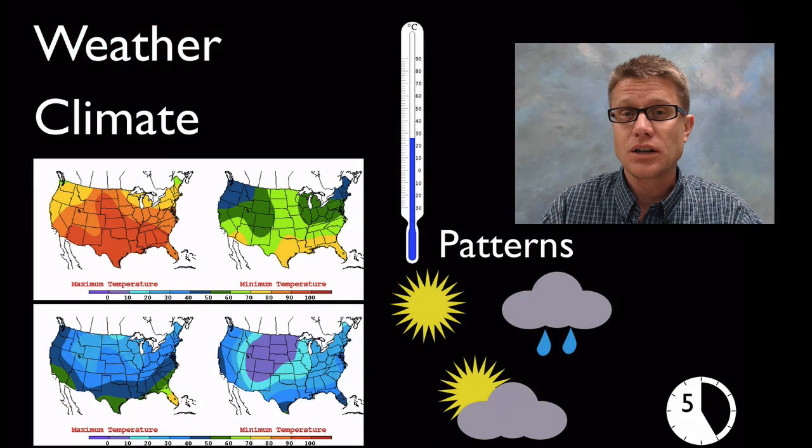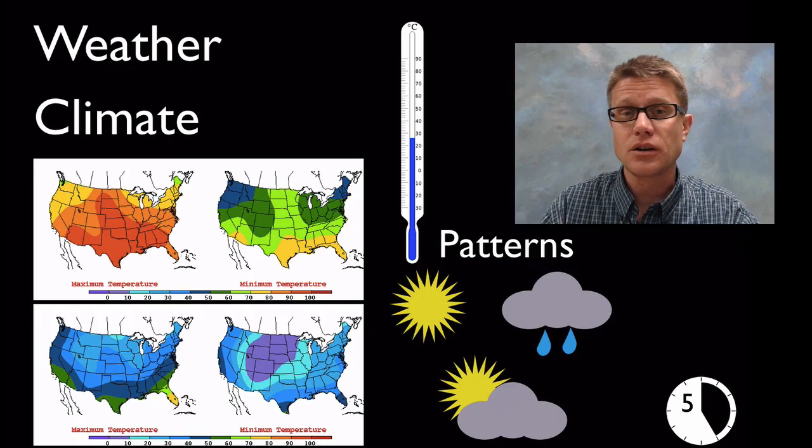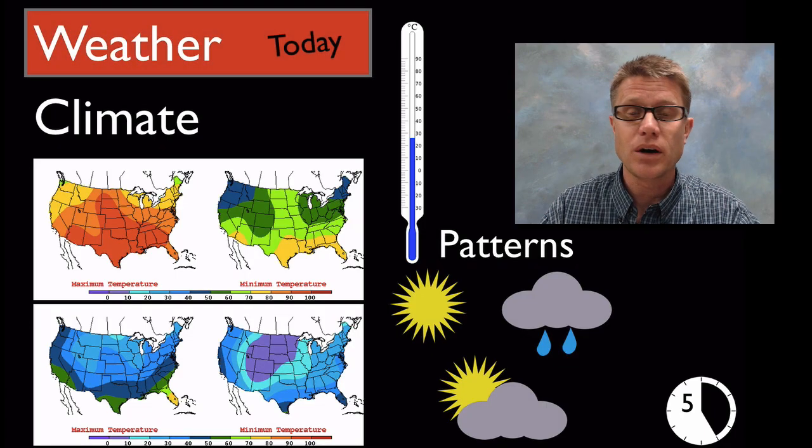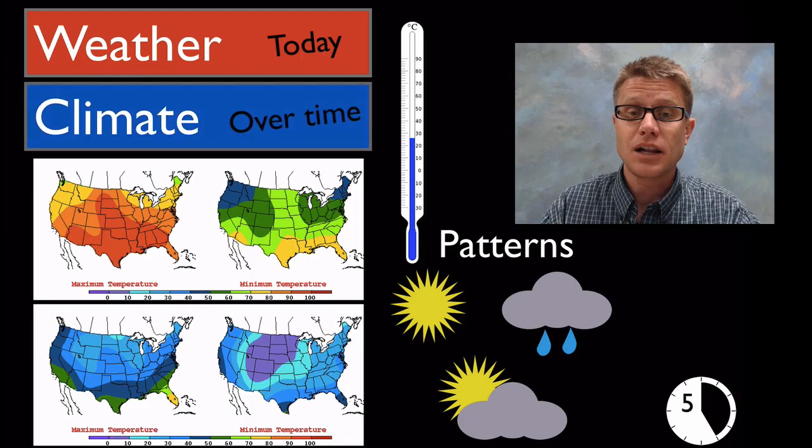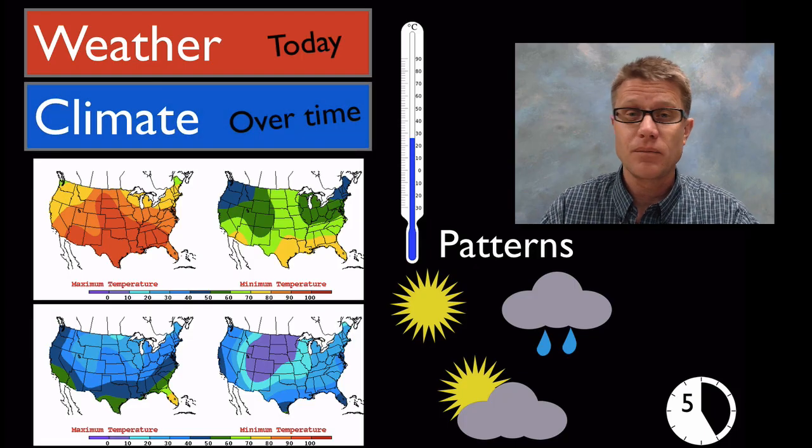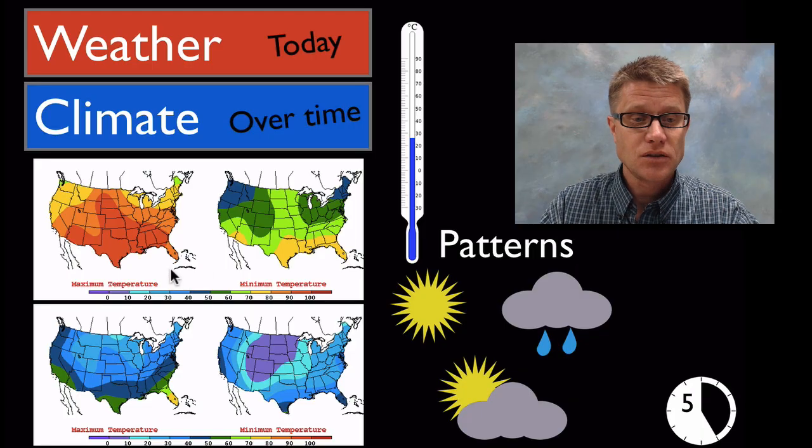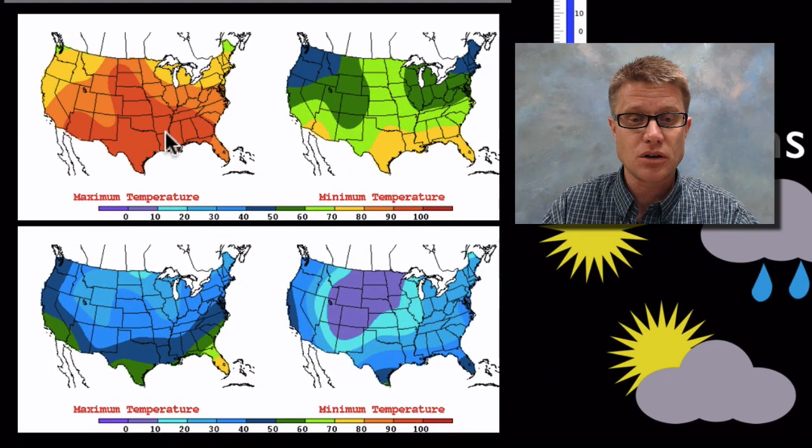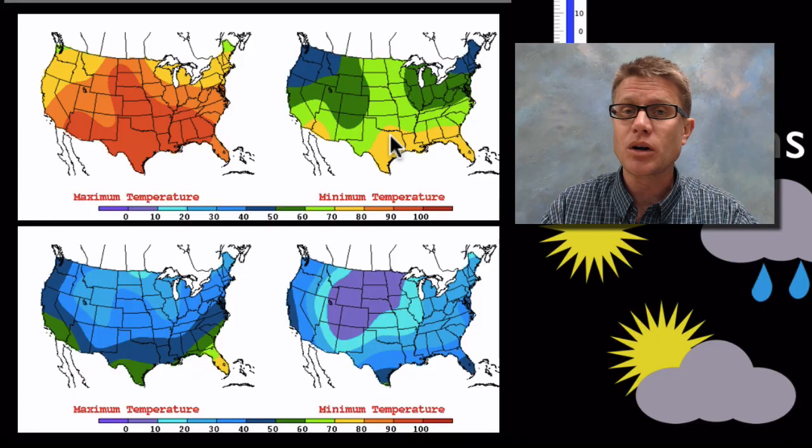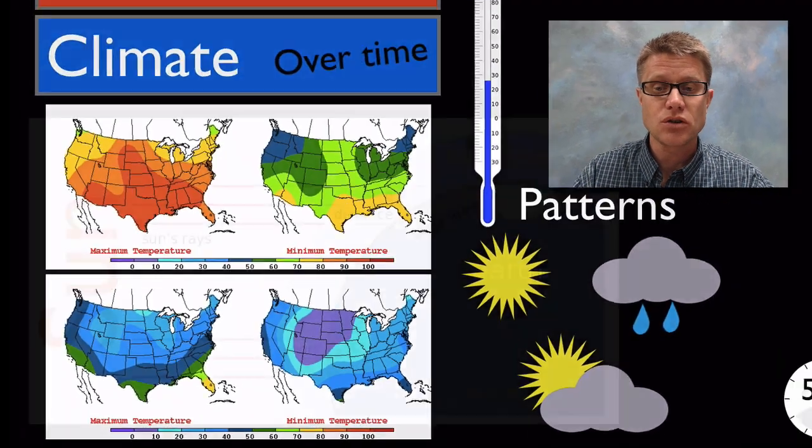As we move into the upper elementary grades, we want to make sure we're clear on the difference between weather and climate. Weather is what it looks like today; climate is what it looks like over time. They're the same measurements but over a long period. Here we're looking at maximum and minimum temperatures.